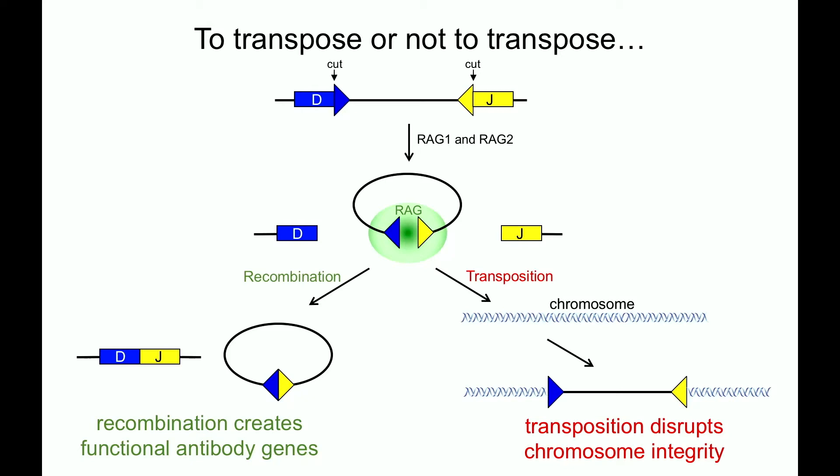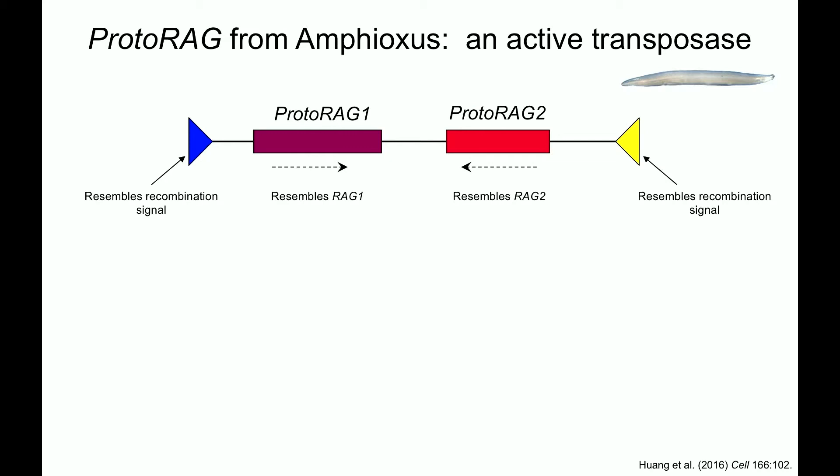The answer came from an unexpected direction — one of these RAG transposon-like elements from a species called amphioxus. This element is called proto-RAG, discovered by An-Lang's group, and we've been collaborating with them ever since. The transposable element has all the hallmarks we expected: a RAG1-like gene called proto-RAG1, a proto-RAG2 gene, and flanking sequences resembling recombination signals. We expressed the proteins, worked with them in the test tube. They bind DNA and cut DNA very much like RAG.